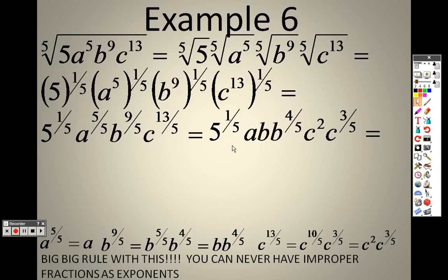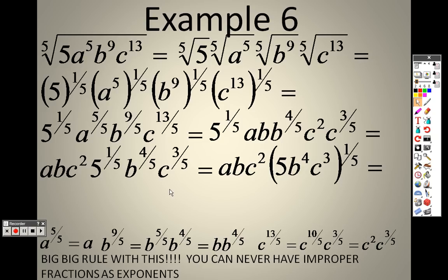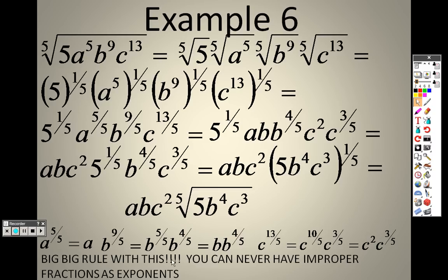What you're supposed to do is: anything that does not have a root or a fraction in the exponent, move those all together and put them out in front. So that's why I have a, b, and c squared out in front. Each of these remaining items has a fraction exponent with a 1/5. I can take the same 1/5 out of all of them, put it in parentheses, and rewrite a 1/5 as the 5th root. So really I have a·b·c² times the 5th root of 5·b to the 4th·c to the 3rd.